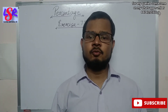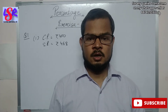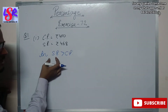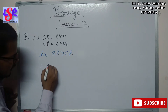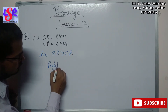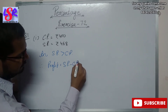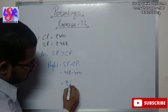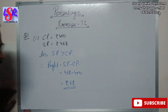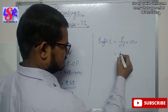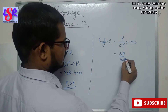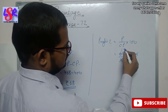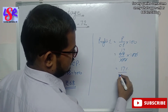Now let us begin with Exercise 7.2, question number 1, first part. Here CP equals 400 and SP equals 468. As SP is greater than CP, this is a case of profit. Profit equals SP minus CP, that is 468 minus 400, which equals rupees 68. The profit percent equals 68 upon 400 into 100, and two zeros are cancelled out, giving us 17% as profit percent.